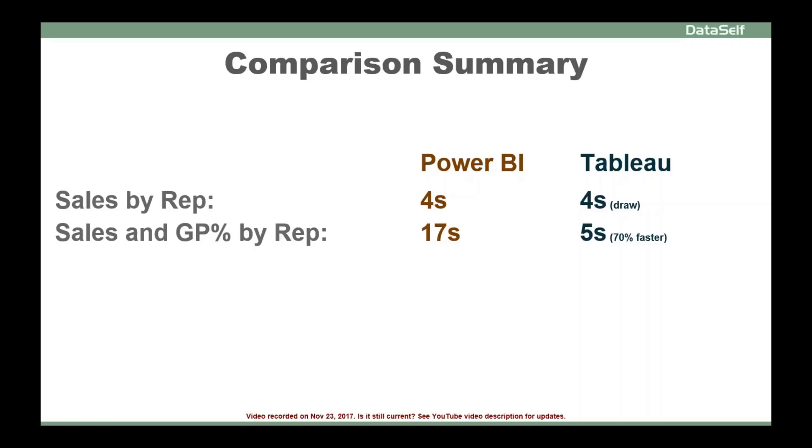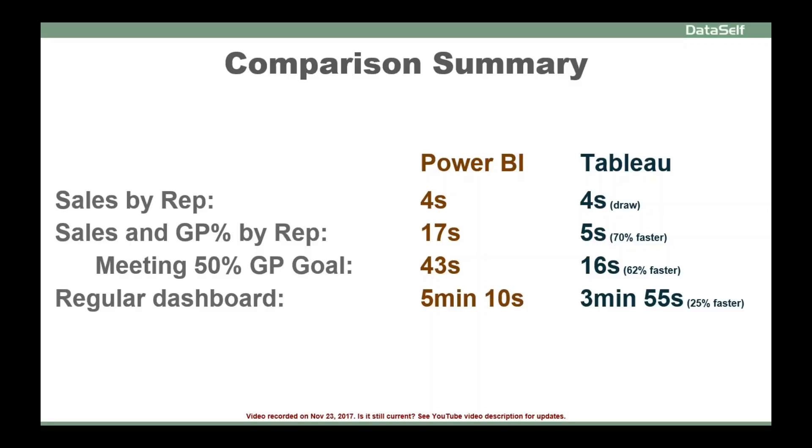In the second step, Tableau was about 70% faster. When we add the gross profit goal, it became 62% faster. For the regular dashboard, it was 25% faster. When we added the gross profit goal, it became 39% faster.